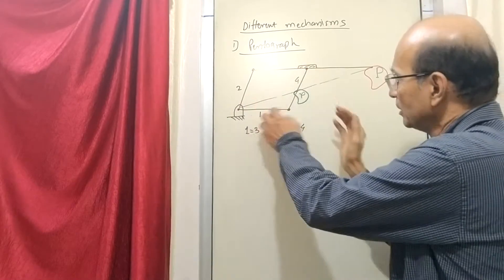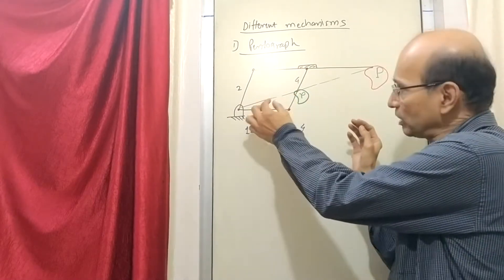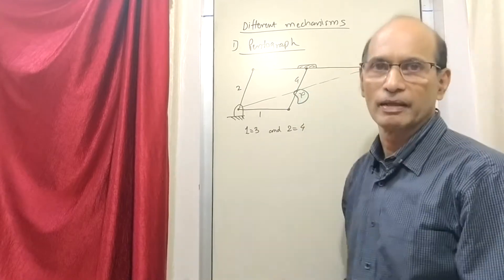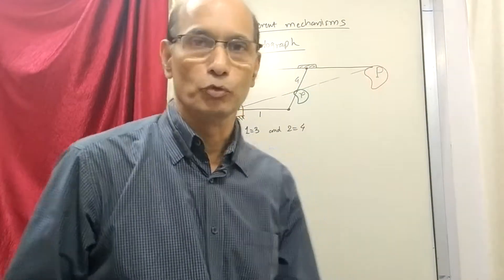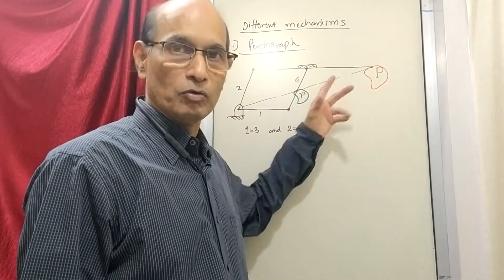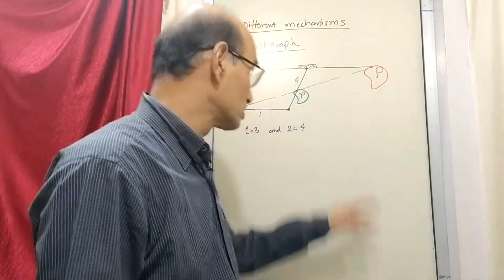If the ratio is different then you will get much smaller cutting out here compared to what is done here. So depending on the application this can be used. Basically it is kind of a magnifier or reducer for doing some cutting action. That is called a pantograph.